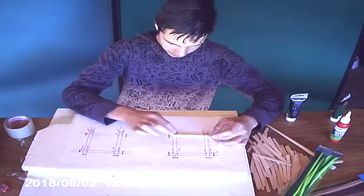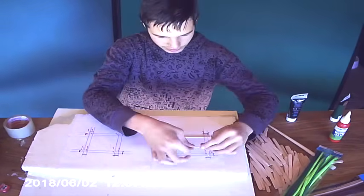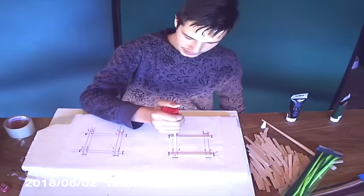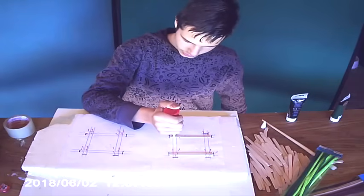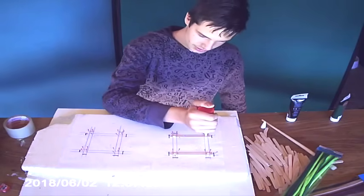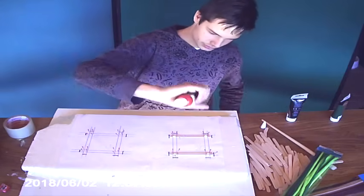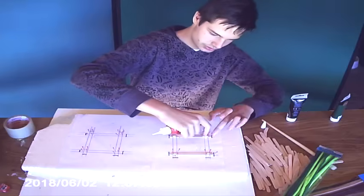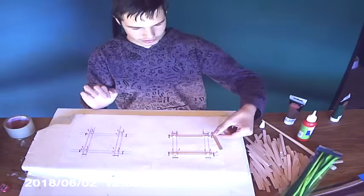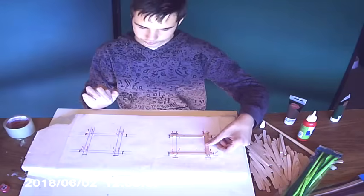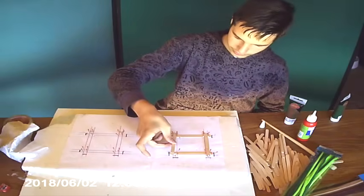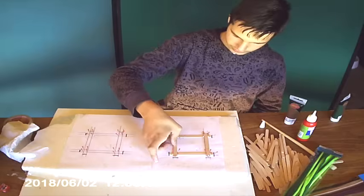So what we do first, we put the popsicle sticks in like so, and you take your quick setting wood glue, and you use most of it on each side. A little too much, put some away. Now we take this, we put it on top like that, and we take this, put it over here.